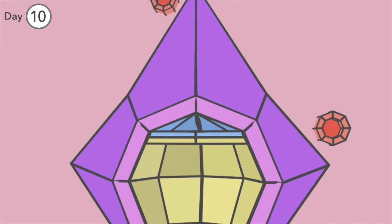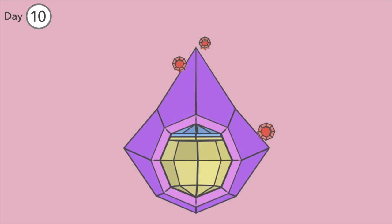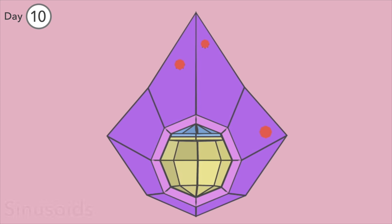Day 10. The blastocyst is now firmly implanted in the endometrium. The syncytiotrophoblast breaks into maternal capillaries known as sinusoids, effectively co-opting their blood for the developing embryo.